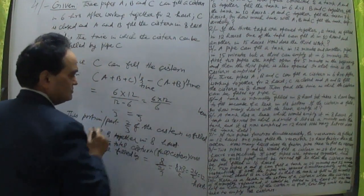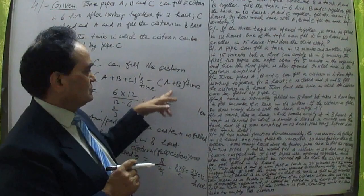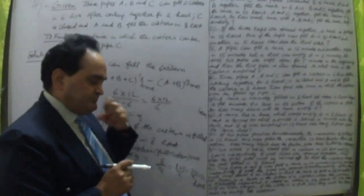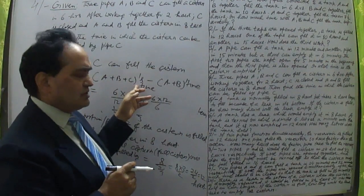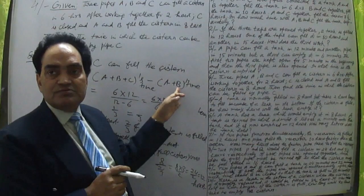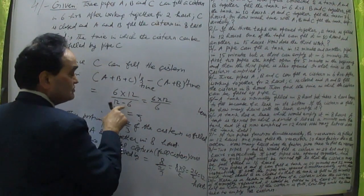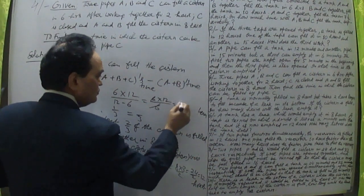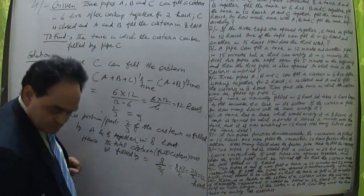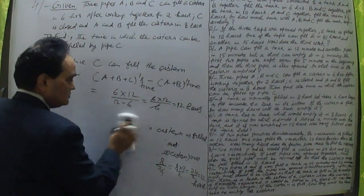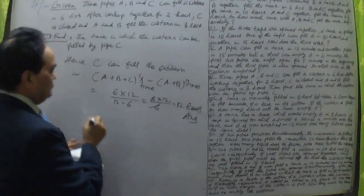That gives us 72 divided by 6, which equals 12 hours. So pipe C alone can fill the system in 12 hours. This is the answer and question number four is completed.